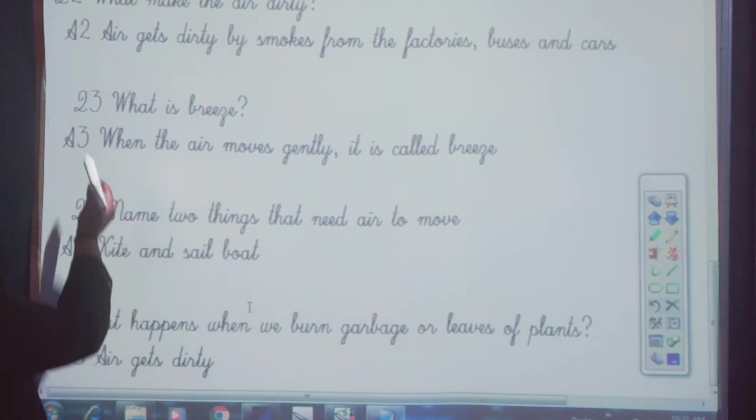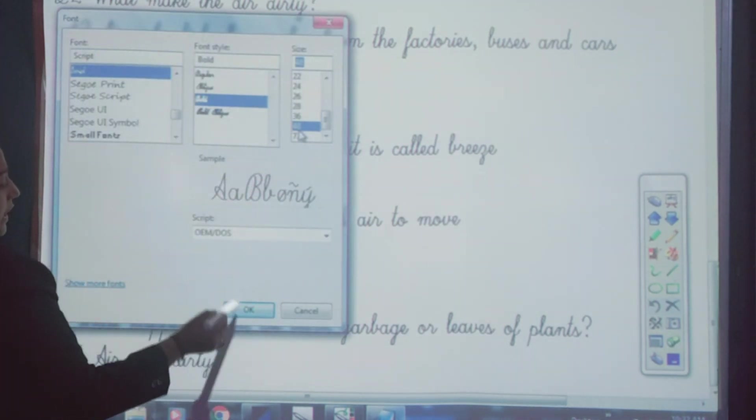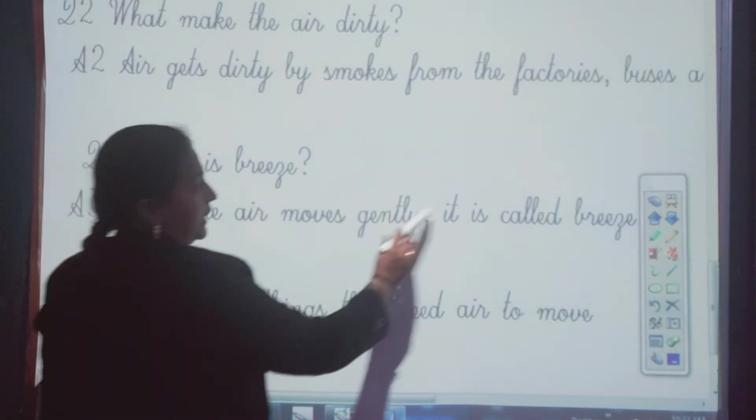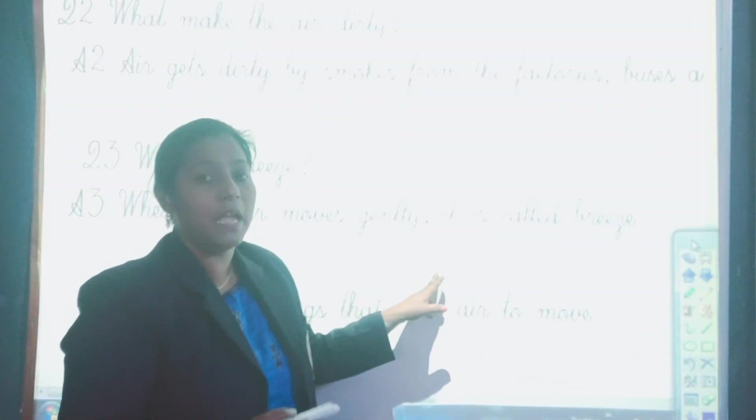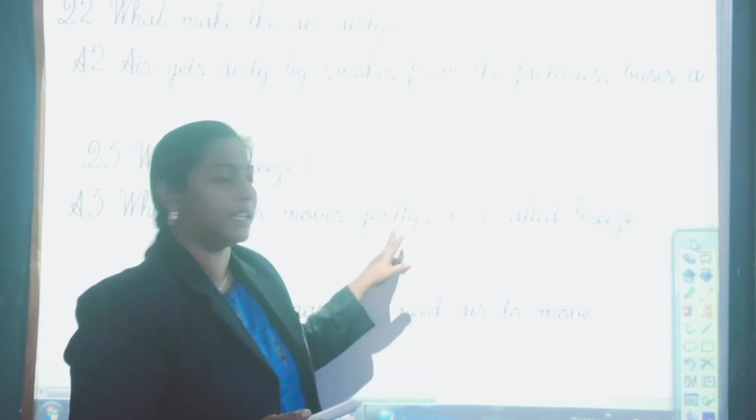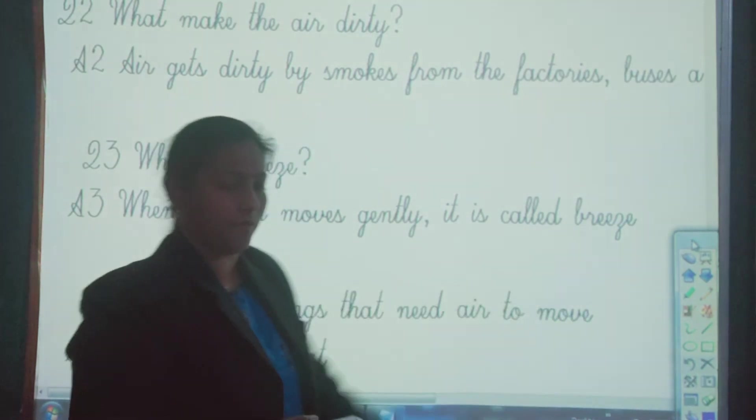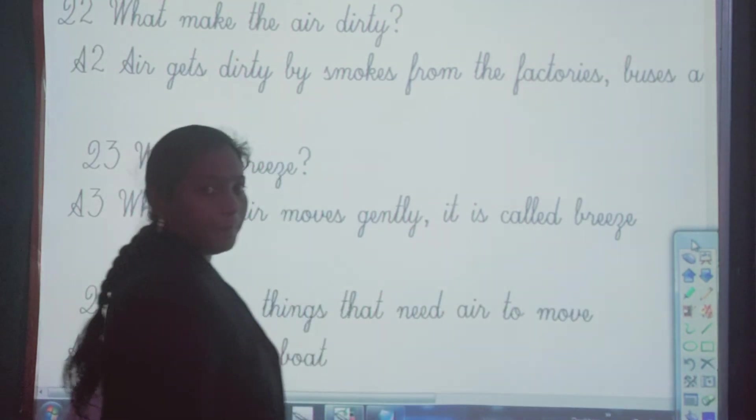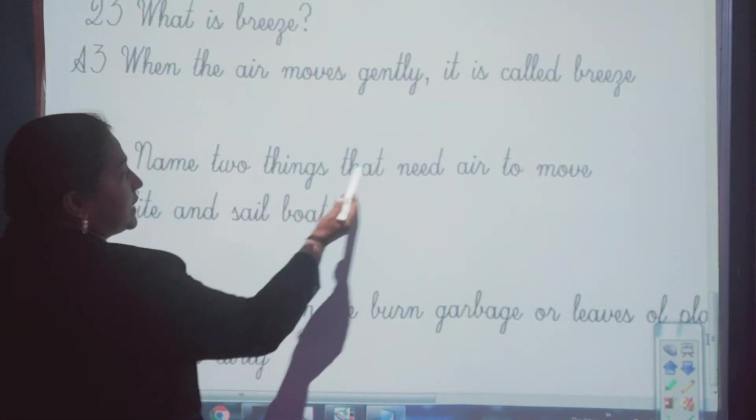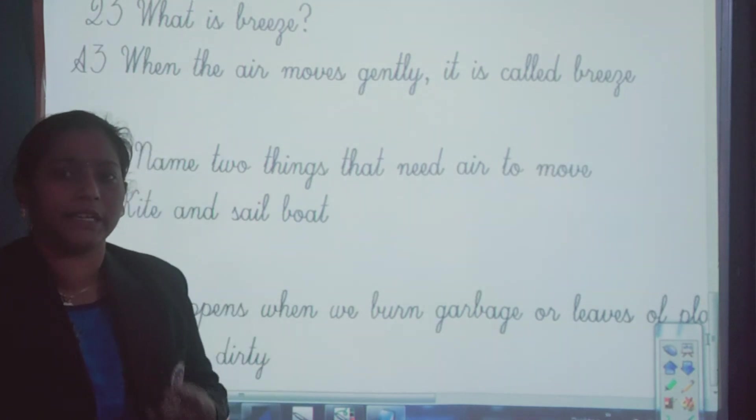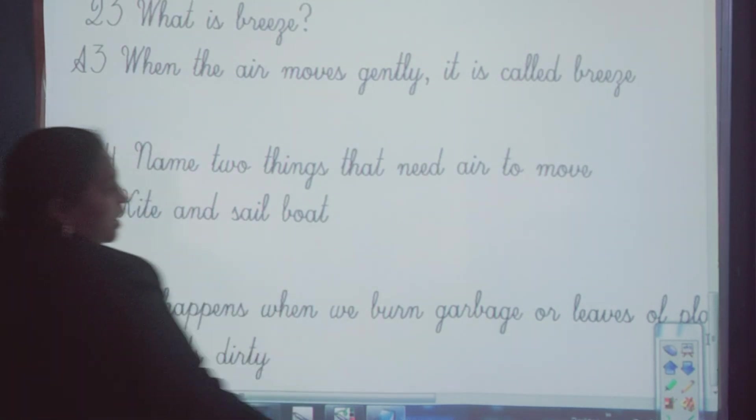Question number three is, what is breeze? When the air moves gently, when the air moves gently, then it is called breeze. When the air moves gently, it is called breeze. Next answer, name two things that need air to move. Any two things that need air to move? So here I have written kite and sail boat. Yes, kite and sail boat. That's all the answers. Next answer.